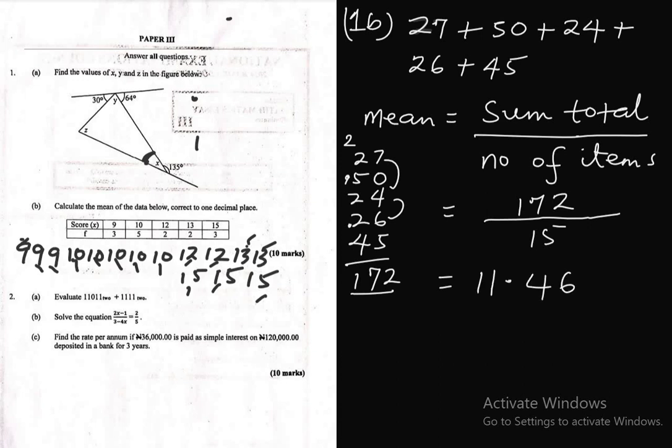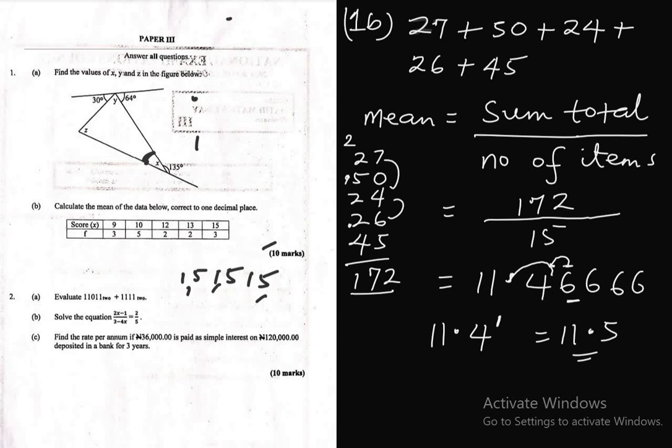Alright, so if we divide 172 by 15, it will give us 11.4666... But the question says your answer should be corrected to 1 decimal place. From the decimal you move once. You check the closest digit to what we have here, which is 11.4 to 1 decimal. If the closest digit is up to 5, you round it up to 1 and add it to your answer. Since we have 6, which is up to 5, we round it up to 1, add it to 4. Final answer will be 11.5. But if the closest digit is less than 5, you leave your answer the way it was. So the final answer is 11.5. And now we are done with question 1A and question 1B.